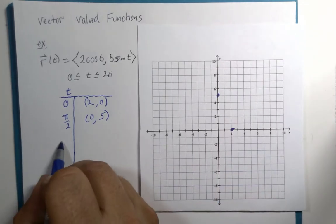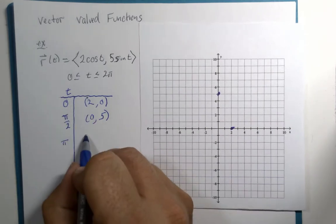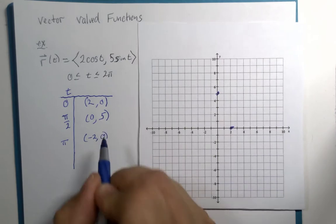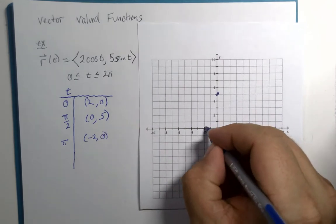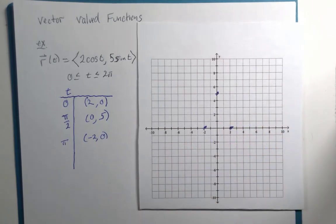If T is pi, cosine of pi is negative 1, that will be negative 2, but sine of pi is 0. So, negative 2, 0 is right here. It's almost like an upside down or opening down parabola.